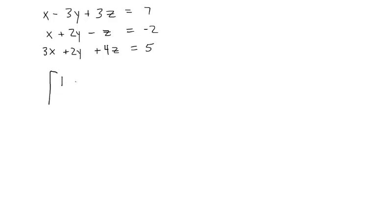So we have 1, negative 3, 3, and 7 in the first row, then 1, 2, negative 1, and negative 2 in the second row, and 3, 2, 4, and 5 in the third row.